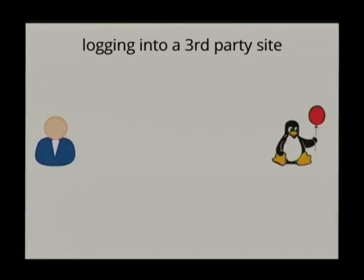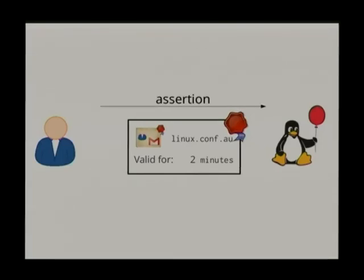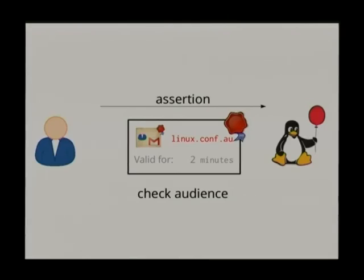From the website's point of view — say logging into the LCA website using Persona — the user sends what is called an assertion. An assertion is a cryptographic bundle containing three things. First, the certificate that proves you control that email address. Then it contains an audience and an expiry. The site checks the audience first — that's the URL of the website you're trying to log into. The reason you want that in the assertion is that without it, the LCA website could impersonate you onto another website that uses Persona. That won't work because the other website checks the audience and gets an audience mismatch. That's the purpose of that field.